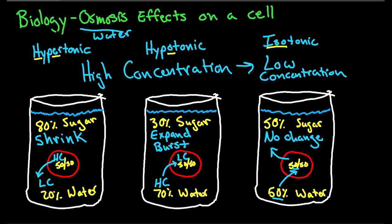Now that we have the basics down, make sure you can work these backwards on a test. If a question says the red blood cell shrunk, reverse engineer it and think about why it shrunk. If the red blood cell burst, think about why using these beakers. Hopefully this helps out, and I will see you later.